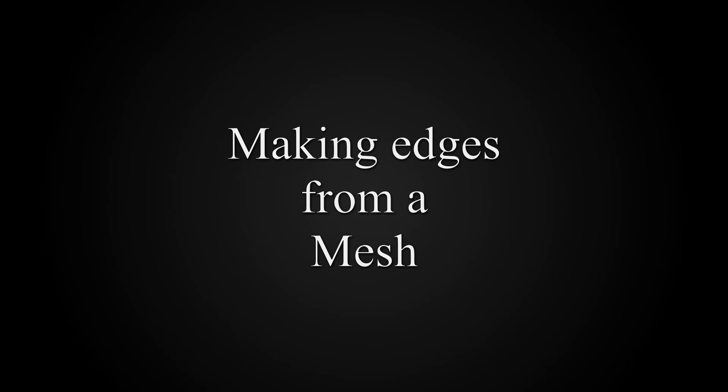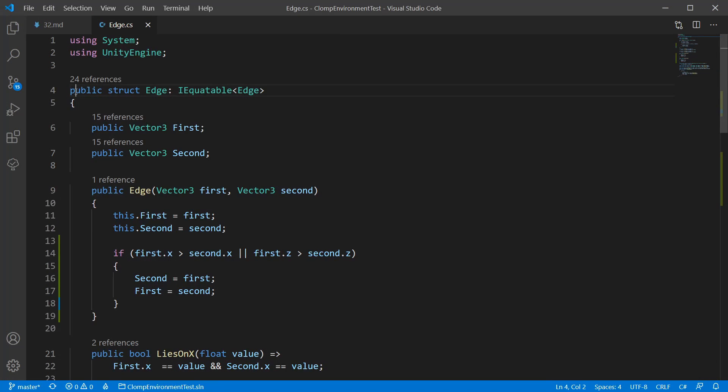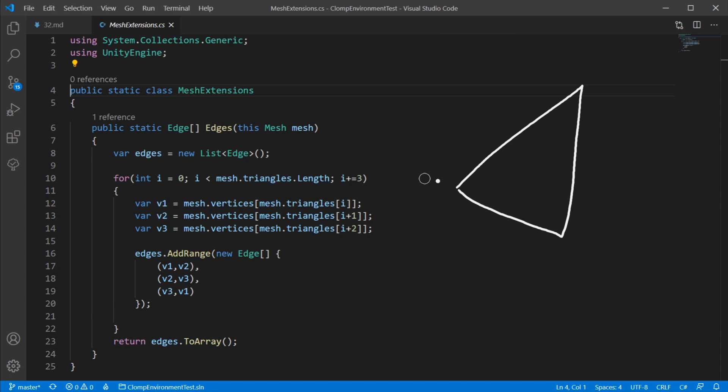An edge is a line that connects two points on a triangle. Unity does not have a method to get edges so I needed to make one. I created a new struct to hold my edge and for each triangle I made a new edge to connect each pair of points. An edge for AB, BC and CA. And that's it.